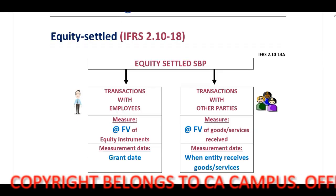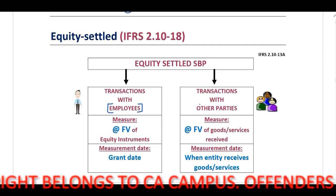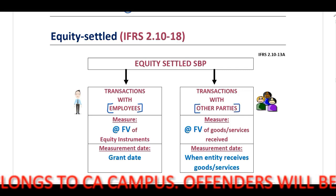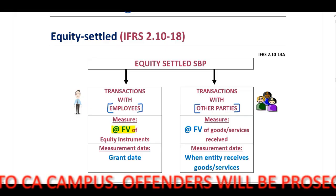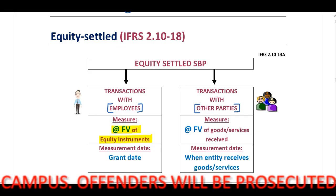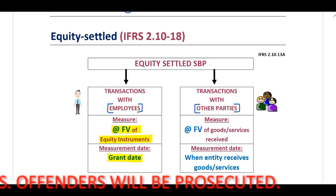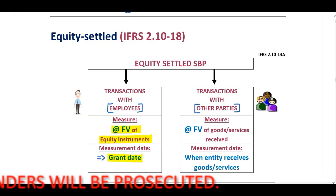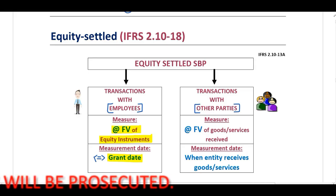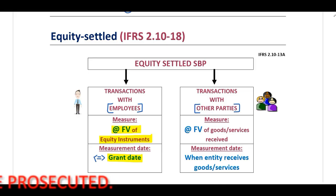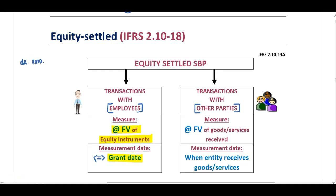Equity-settled can either be a transaction with employees or a transaction with other parties. Equity-settled transactions with employees will be measured at the fair value of the equity instruments on the measurement date, which is the grant date. When you identify equity-settled transactions with employees, your journal entry is to debit employee costs in profit and loss and credit the share-based payment reserve in the statement of changes in equity.